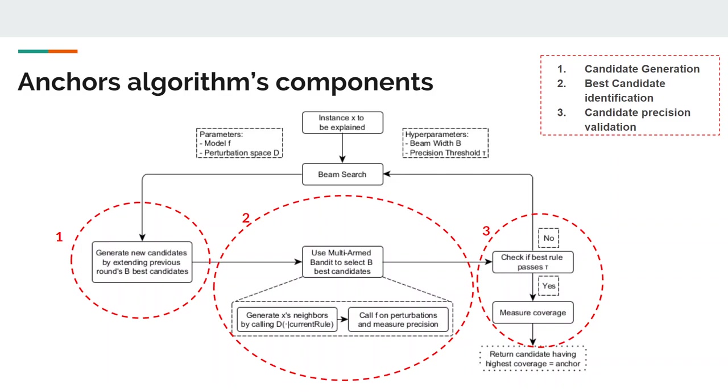The next step is the candidate precision validation, which evaluates the best rule if the best rule has a precision greater than tau to finally return the candidate rule with the best coverage.